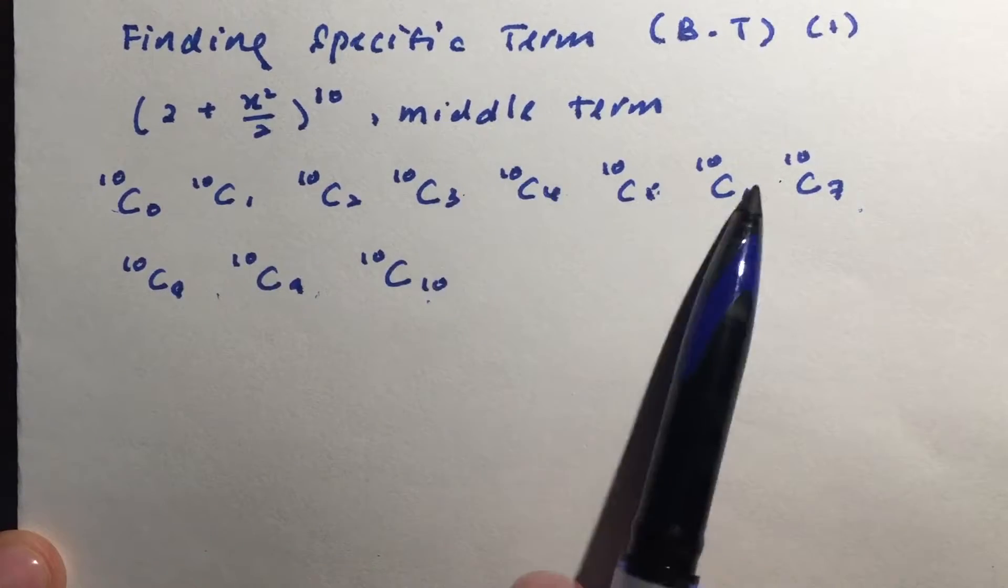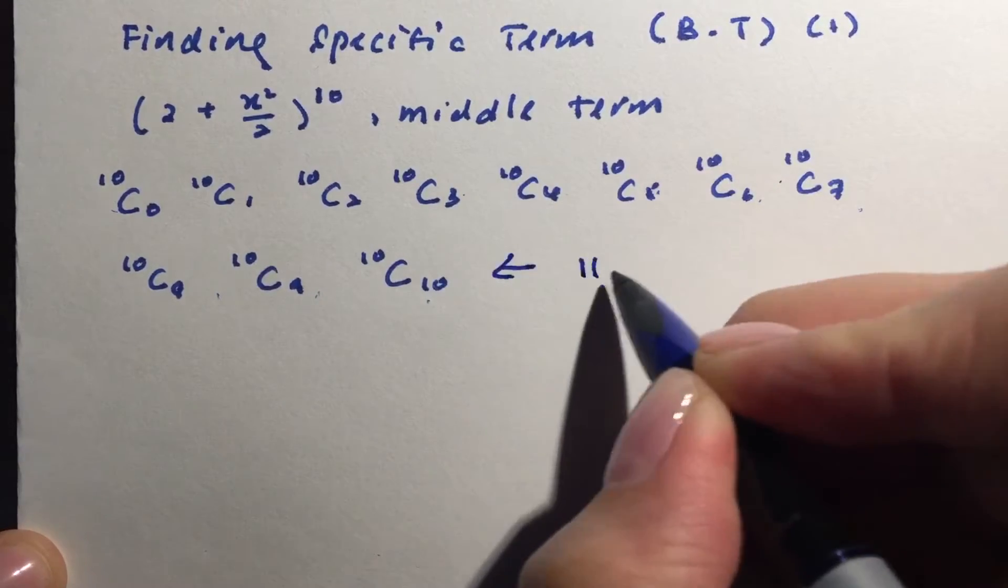1, 2, 3, 4, 5, 6, 7, 8, 9, 10, 11. So there were 11 terms altogether.